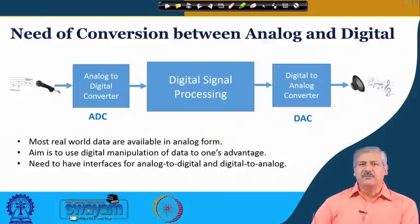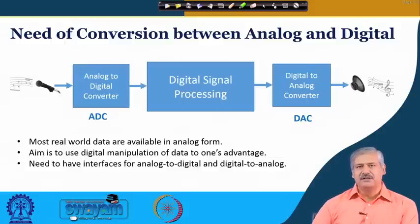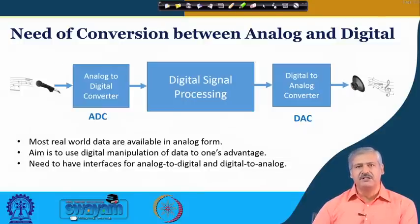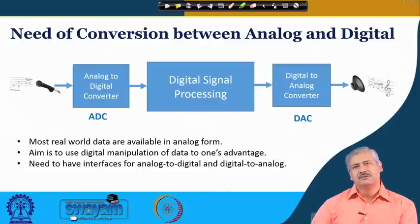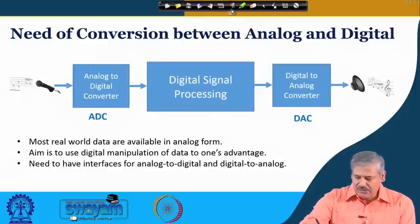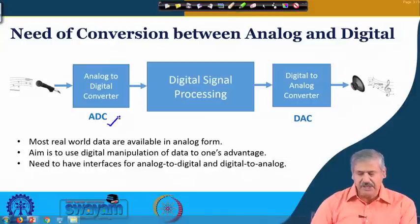Now we go to a very important topic: digital manipulation of signals. Most real-life signals we encounter are analog in nature — analog means continuously varying with time. We had already seen that digital manipulation is advantageous, and more about it you will study in future courses or in signals and systems or digital signal processing. What is important is that we should be able to convert analog data to digital — analog signal to digital signal — for which we need something called an analog to digital converter, abbreviated as ADC.